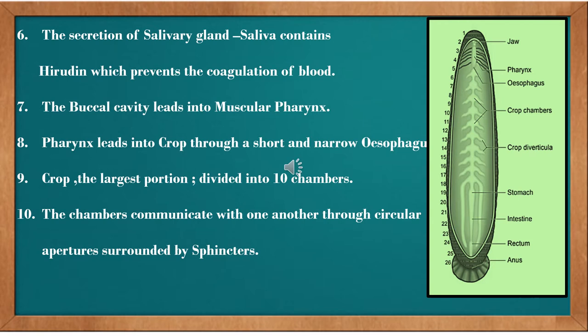When the leech sucks blood from a human, the blood has to flow continuously without coagulation. Coagulation of blood is prevented by hirudine. So in the buccal cavity you find three jaws with three lines of small teeth, and the salivary glands produce saliva which prevents the coagulation of blood.